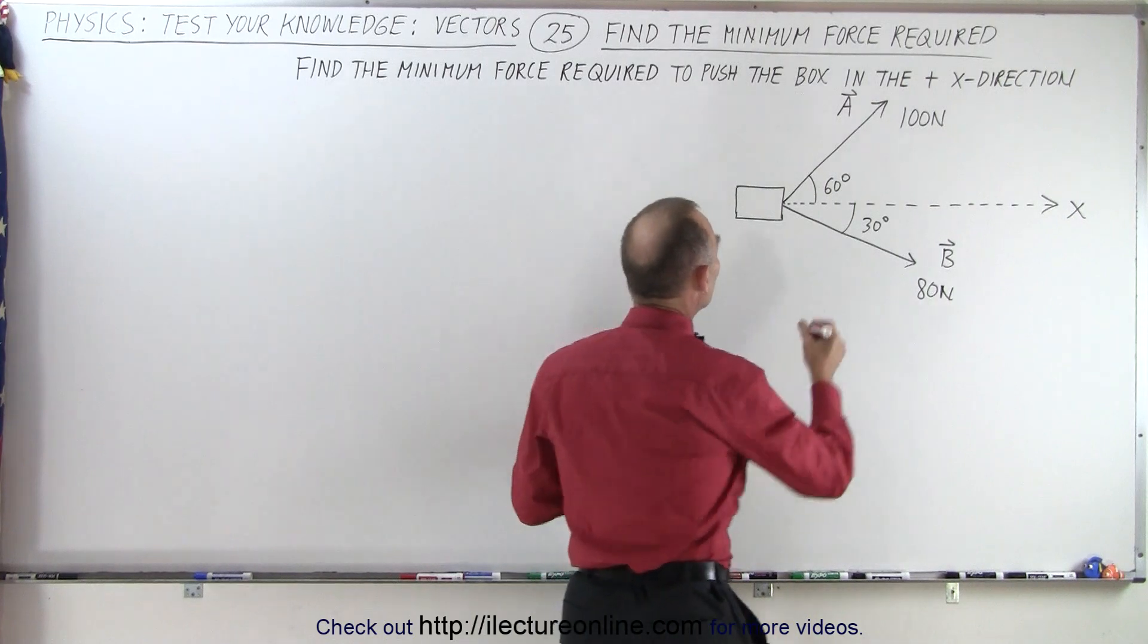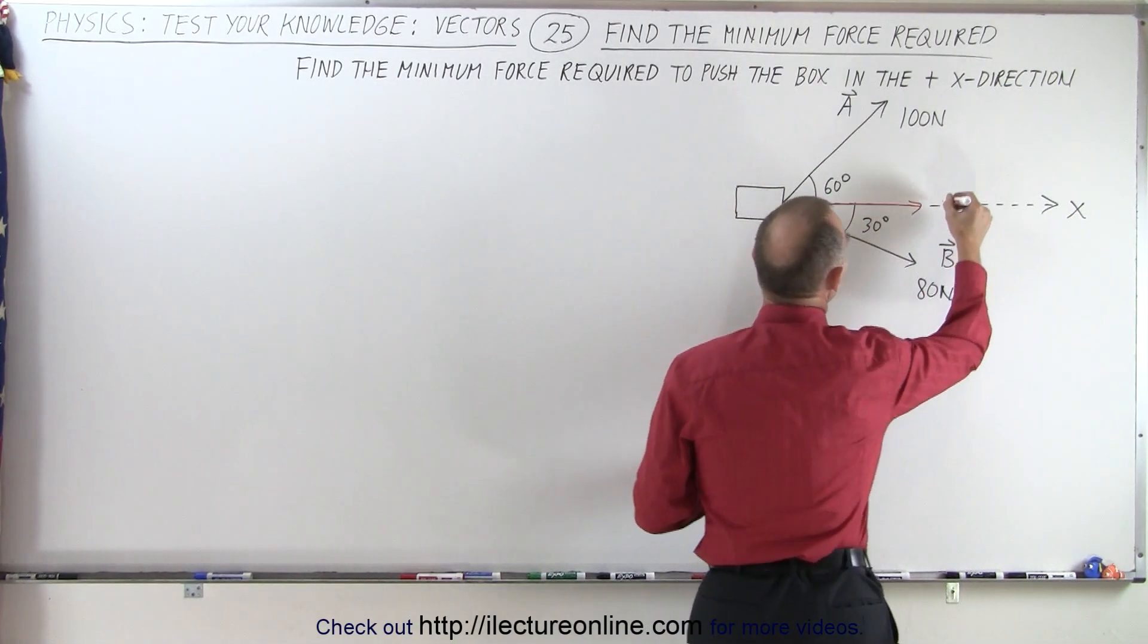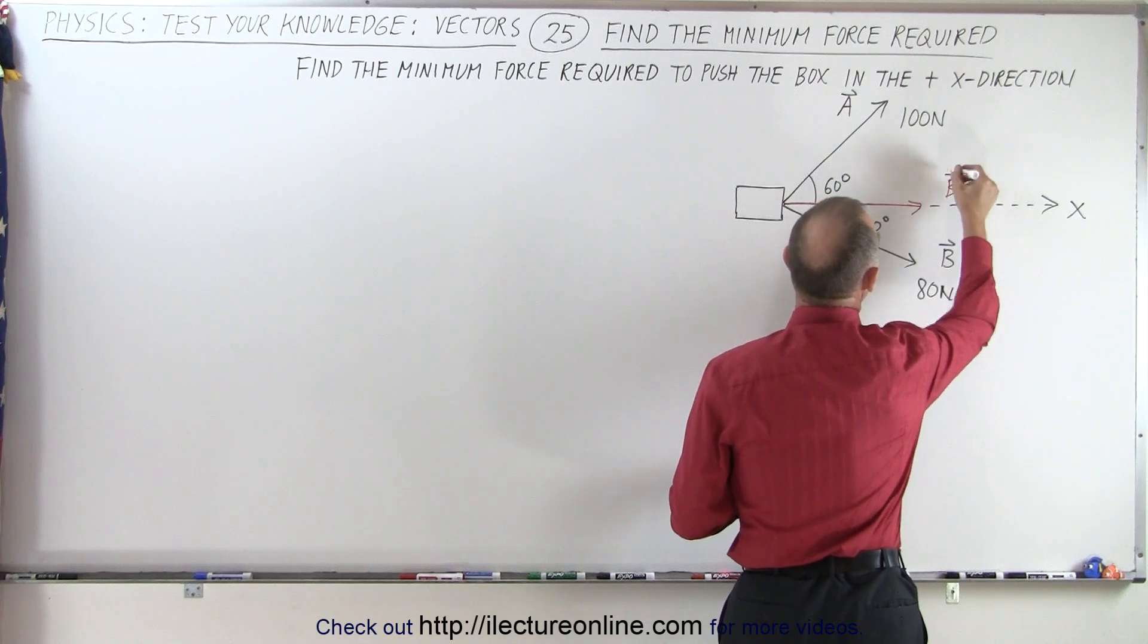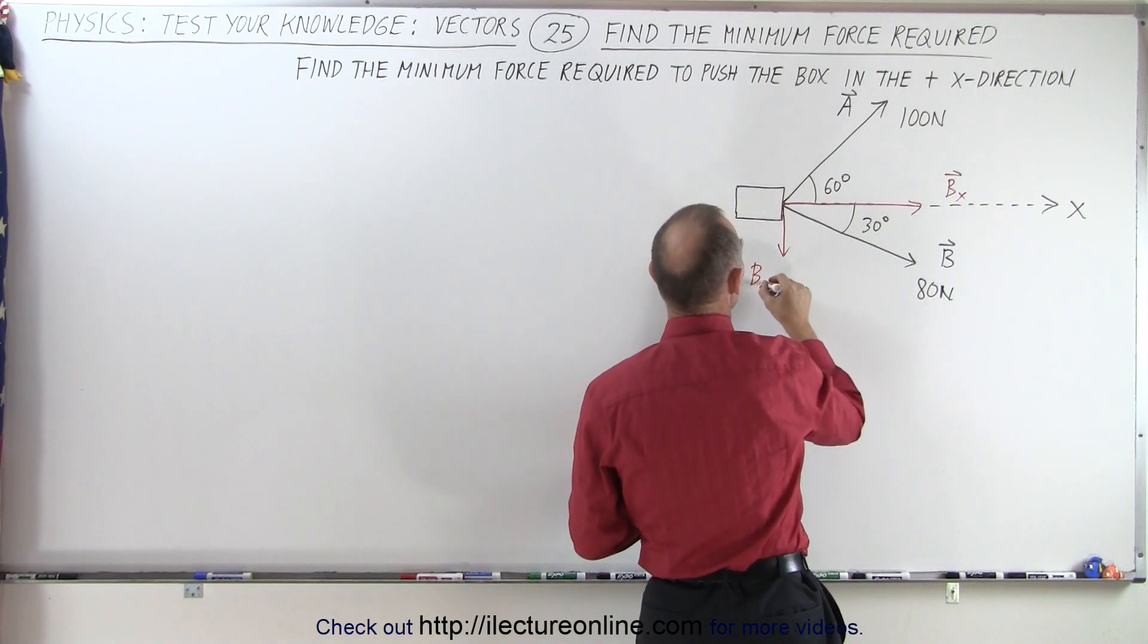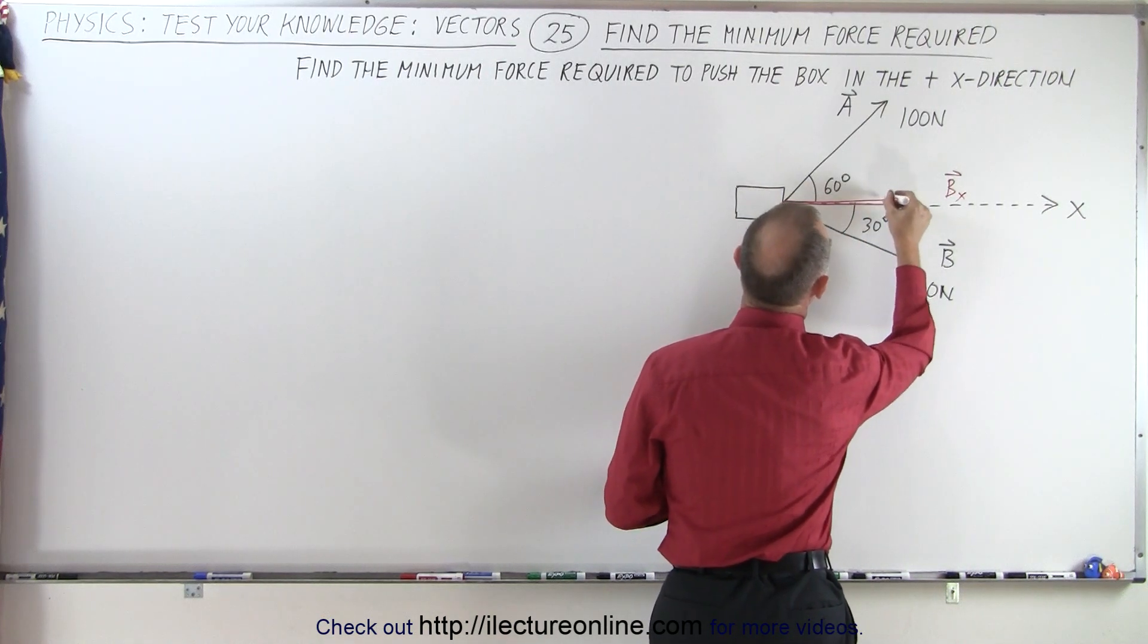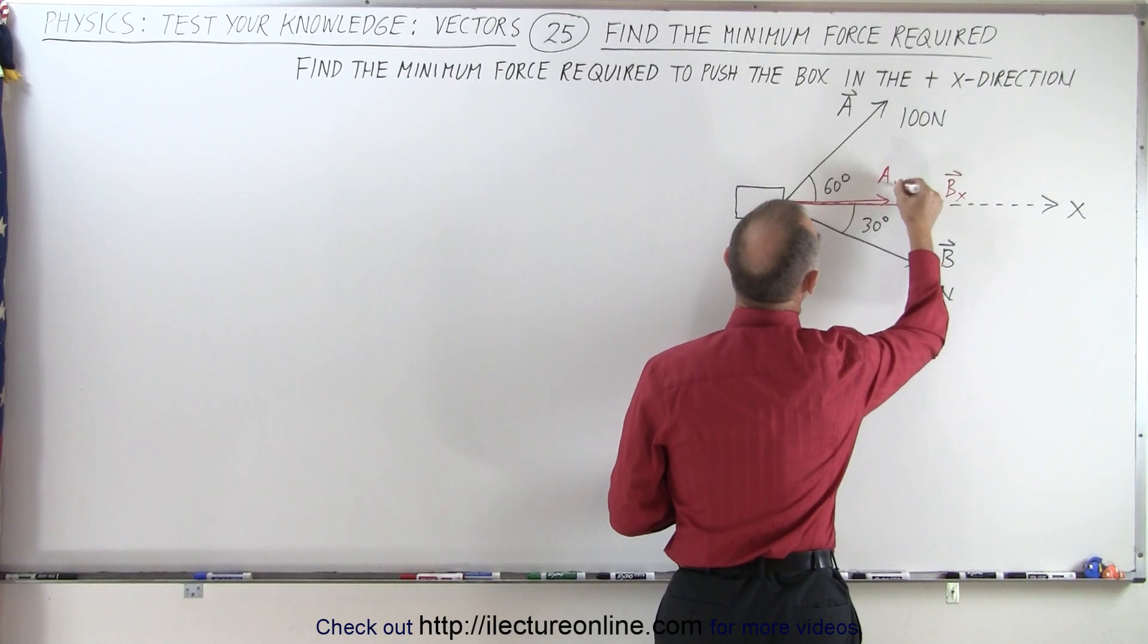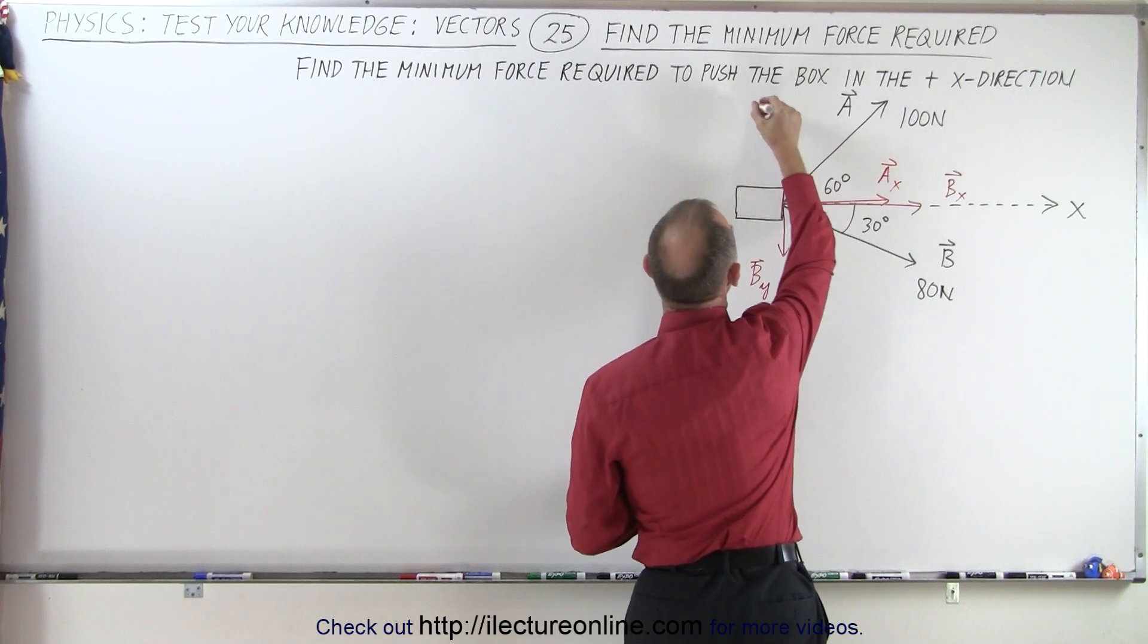So let's go ahead and draw that graphically. This here will be what we call b sub x, the x component of b, and this here will be the y component of b, b sub y. And for the a vector, same thing, we'll have an a component, this will be a sub x, an x component for a, and we have a y component for a.